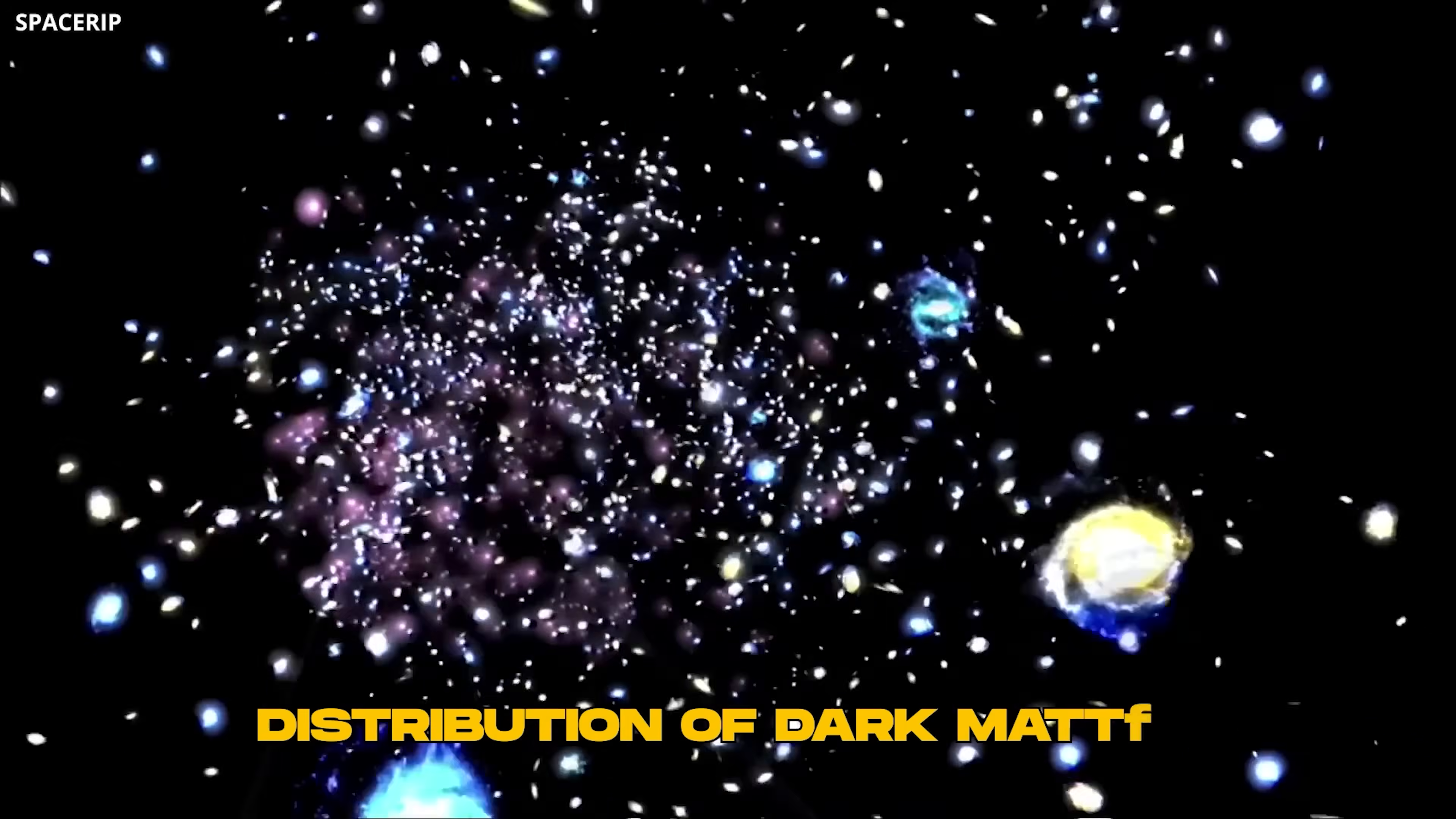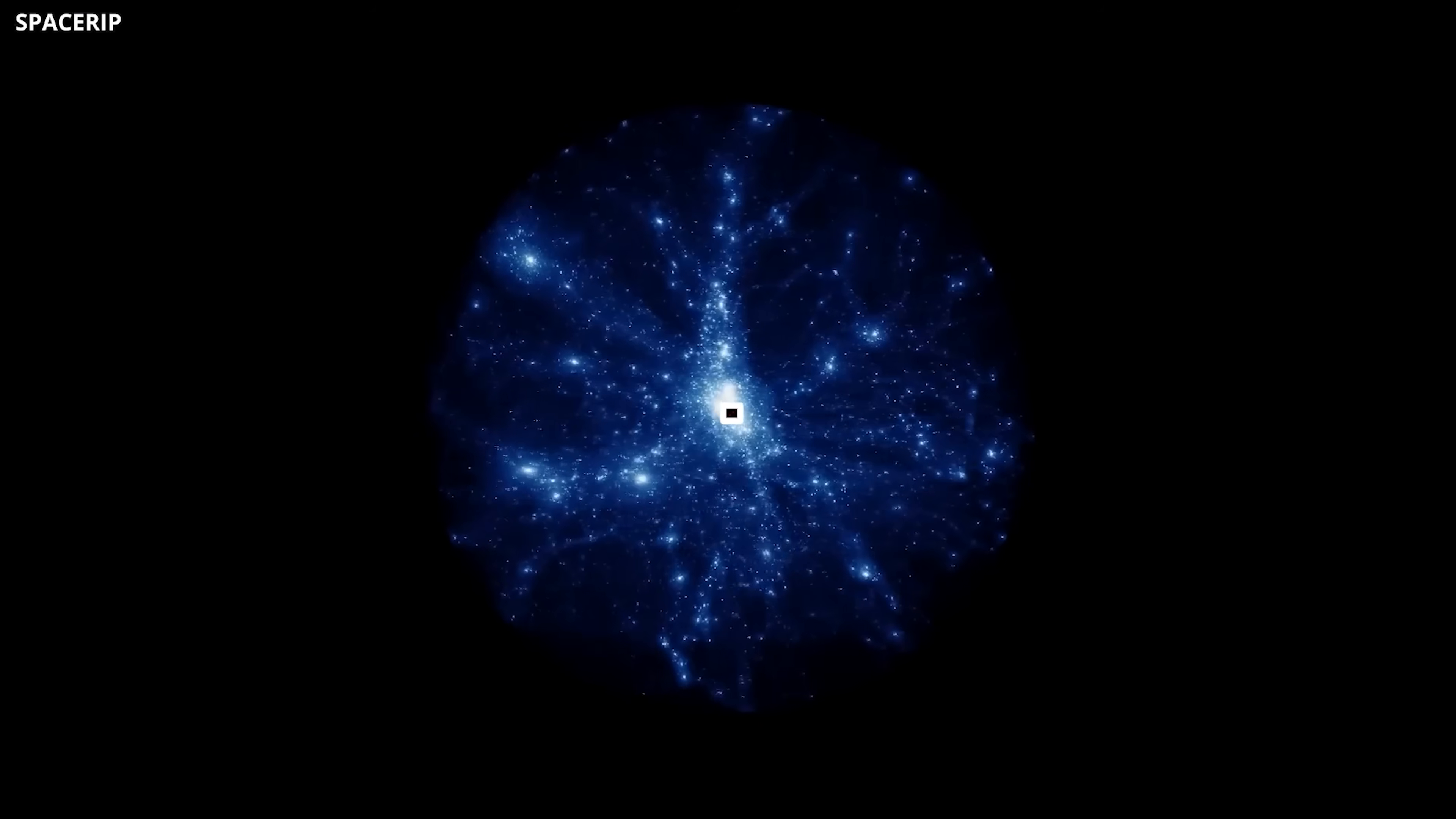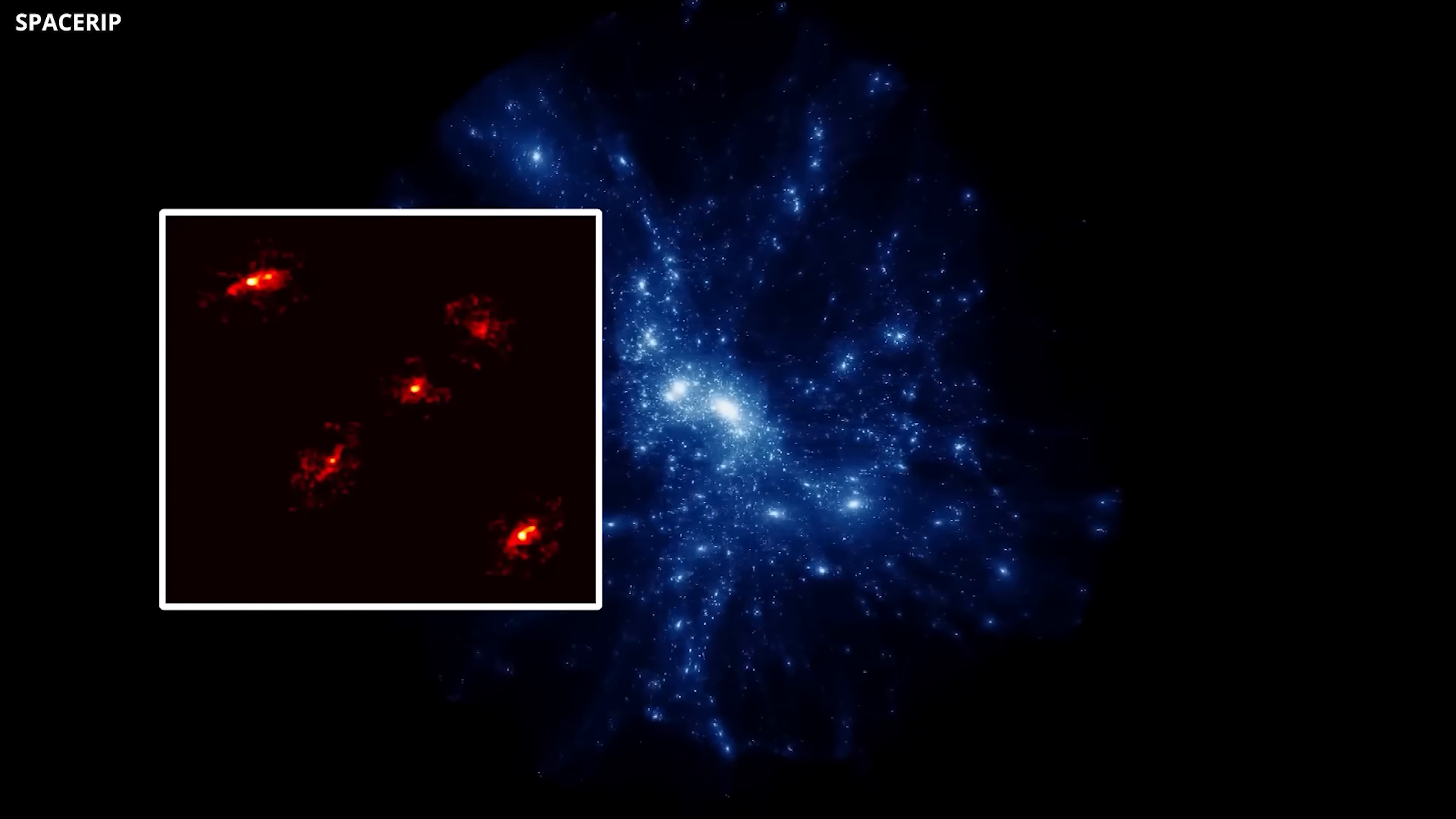Distribution of dark matter: Does it form smooth halos, or exist in dense clumps and cores? The fifth image shows that concentrations of dark matter can dramatically affect lensing patterns.